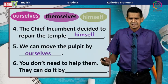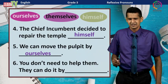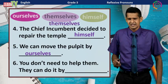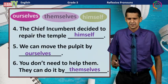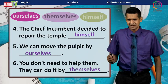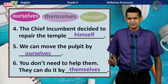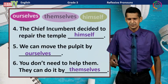Number six: You do not need to help them. They can do it by ___. The answer is 'themselves.' They can do it by themselves, showing that they can do it alone without the help of others.